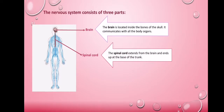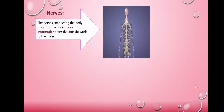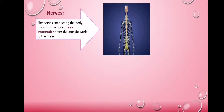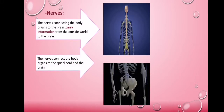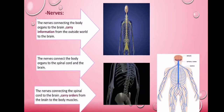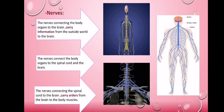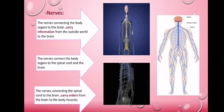The spinal cord extends from the brain and ends up at the base of the trunk. Nerves — the nerves connecting the body organs to the brain carry information from the outside world to the brain. The nerves connect the body organs to the spinal cord and the brain, and carry orders from the brain to the body muscles.